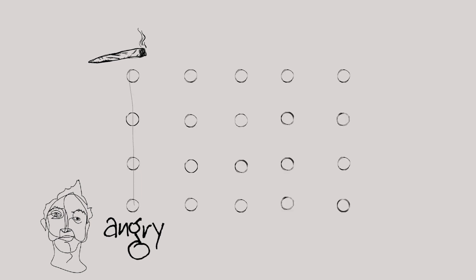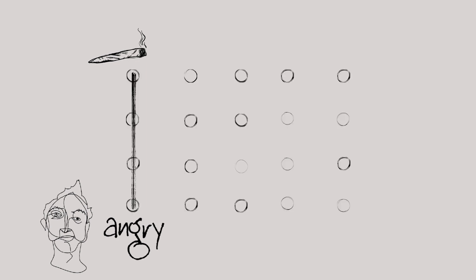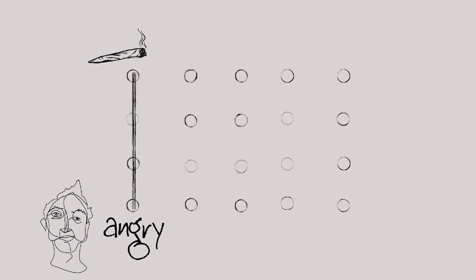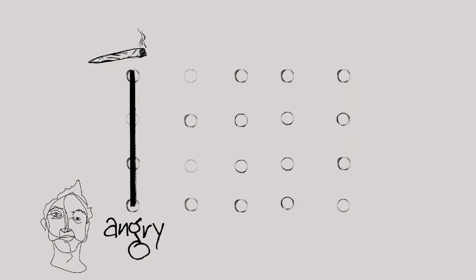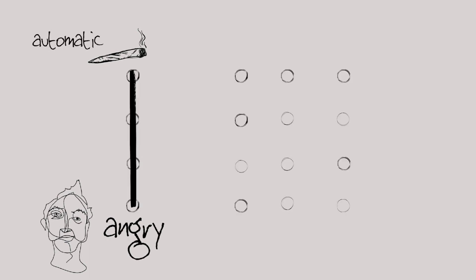Over time, if that person continues to respond in that same way by smoking cannabis, the connections in the brain strengthen and the neural pathway can become what we might call a neural highway — over time becoming very strong in the brain, sometimes even getting rid of those other neurons around the neural pathway. The person might describe their response of smoking cannabis as automatic and they might not feel like they have any control over their use.